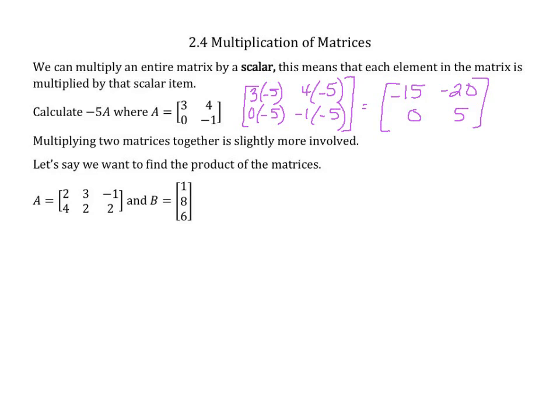Let's say we want to find the product of these two matrices. We have a 2 by 3, and we want to multiply that by a 3 by 1. So we need to make sure these two are the same. And when that happens, our new matrix is going to be the outside numbers here. So we're going to have a new matrix that's a 2 by 1.